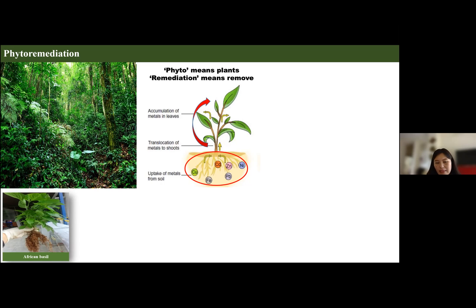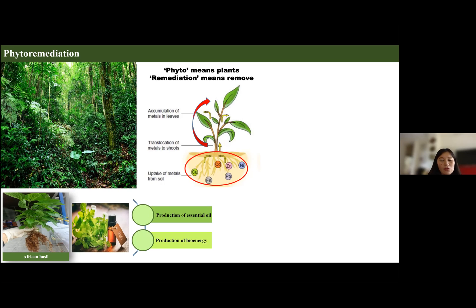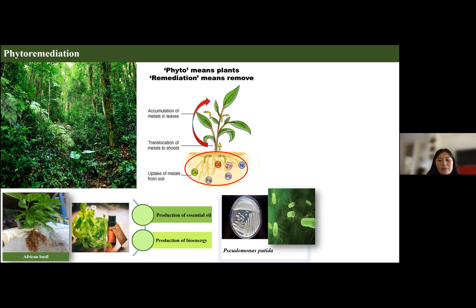Findings have suggested that a plant known as African basil, native to Africa and South Asia, which has been conventionally used for its medicinal and culinary purposes, can be a potential plant for cleanup of heavy metal contaminated sites. Additionally, this plant can be used for production of essential oil and bioenergy.